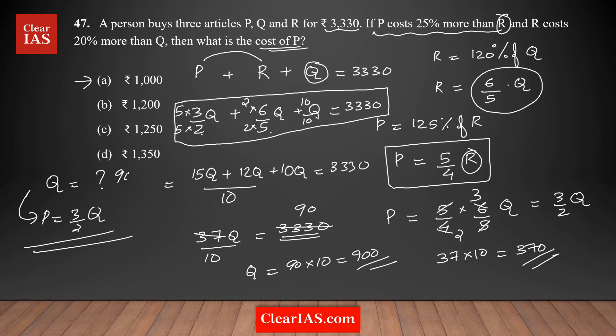You found the value of Q, which is 900. The value of P is 3/2 times 900, which equals 1350. Your answer is option D.